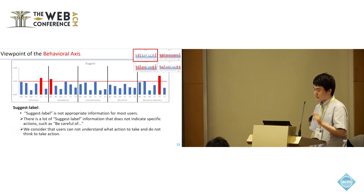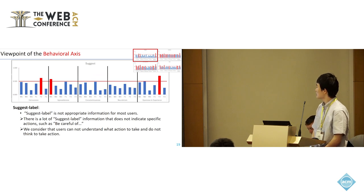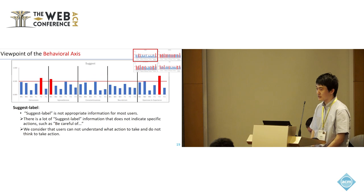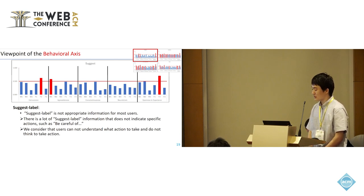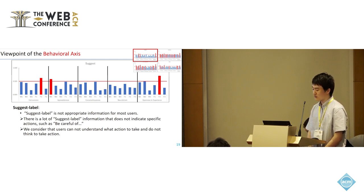First, I will talk about the result of the suggestion level. From this result, suggestion level is not appropriate information for most users. This is because there is a lot of suggestion-level information that does not indicate specific actions — such as 'be careful' — and we consider that users cannot understand what action to take and therefore do not think to take action.